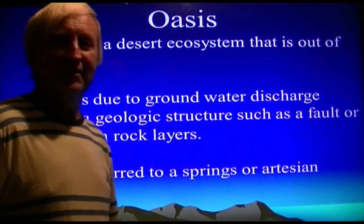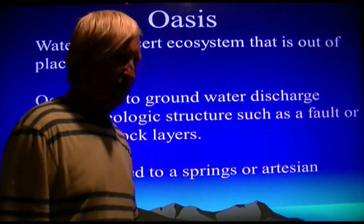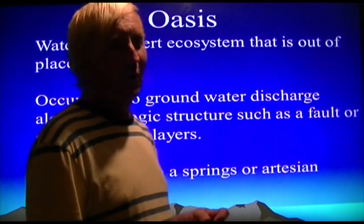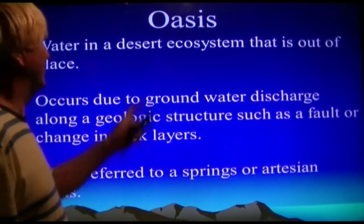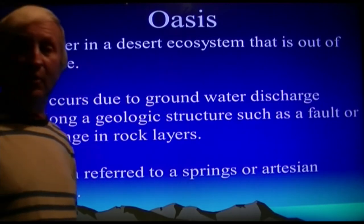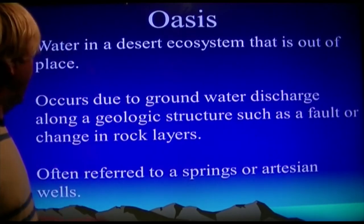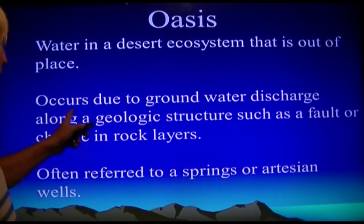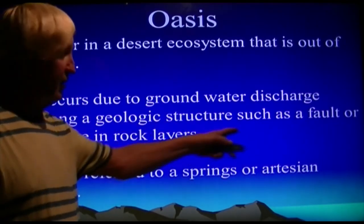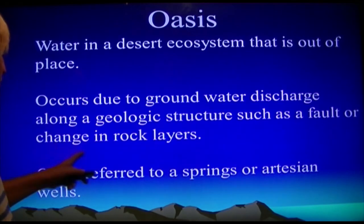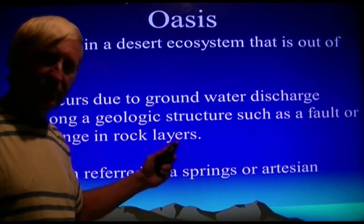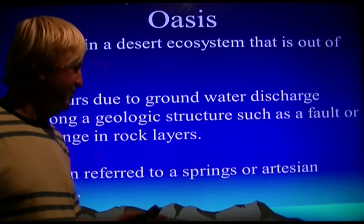Let's look at the last aspect of the semester — oases. An oasis is water in a desert ecosystem that's out of place. They basically occur due to groundwater discharging along a geological structure like a fault or a change in geological structure or rock layers. They're often referred to as springs or artesian wells — water that's naturally coming out of the ground.